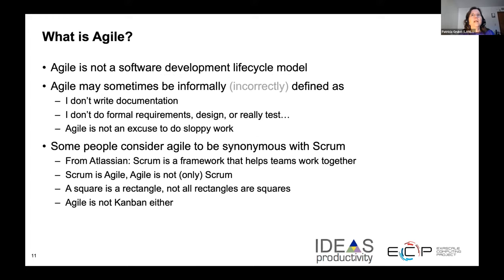Agile is not a traditional software development cycle — it doesn't have the phases that a traditional model has. Sometimes Agile is described as being Scrum. Scrum is widely used in enterprise communities to help teams work together. Scrum is Agile, but Agile is not only Scrum — much like a square is a rectangle, but not all rectangles are squares. Scrum in scientific teams hasn't really been explored that much, but we do use Kanbans, and they can be seen as a tool to aid Agile methodologies.